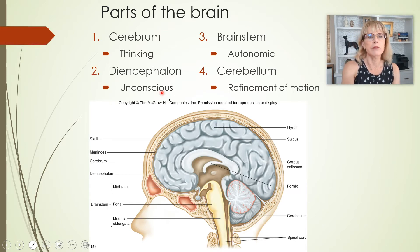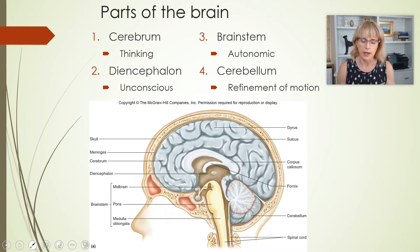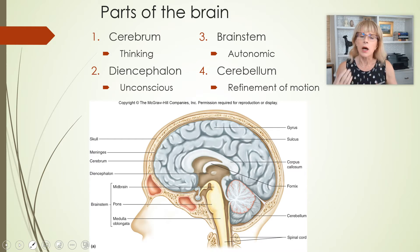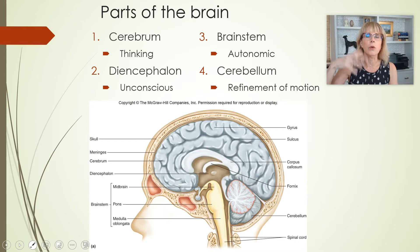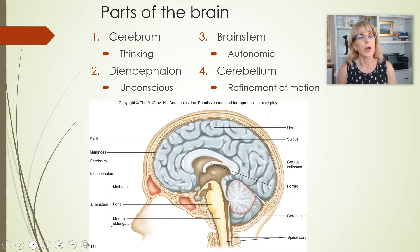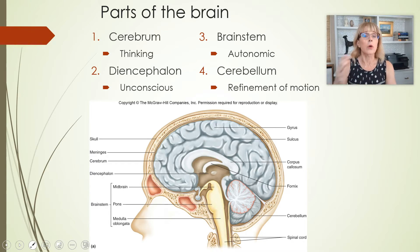Then we've got the diencephalon. The diencephalon has unconscious and autonomic functions. By 'unconscious,' I mean the way the hypothalamus takes conscious information — like it's cold, or I'm scared, or my boss is a drag — and translates it in a way that we are not able to consciously modulate, like higher or lower levels of hormone in the body. So that's unconscious.